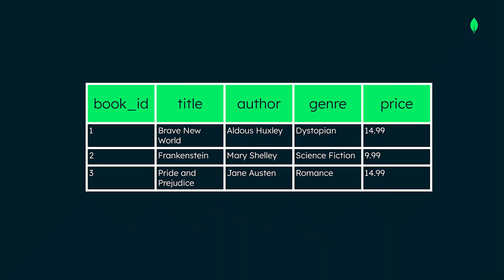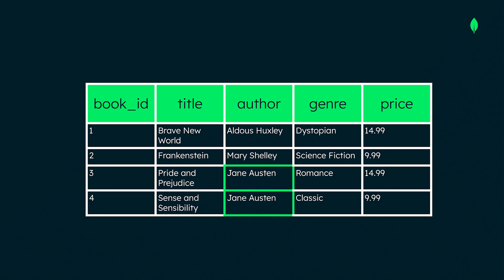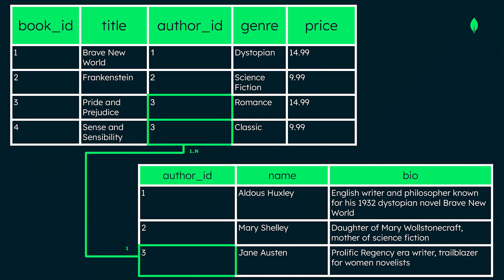To model the books metadata for our online bookstore, we would need a table for books and the related information, including their author. However, authors can have more than one book, and in our example, one book only has one author. To avoid having duplicated data in our table, we need a separate author table, with the book table referencing the author by ID.